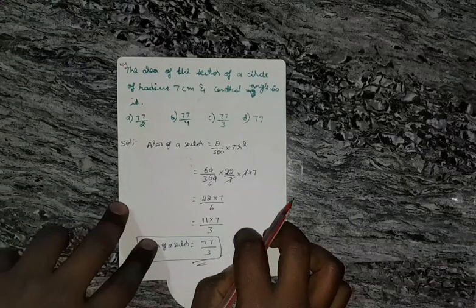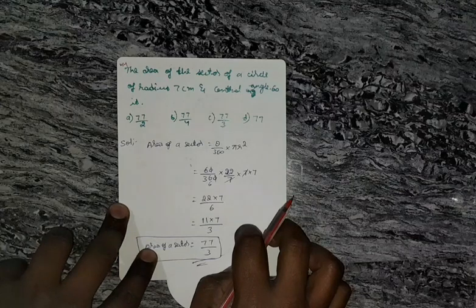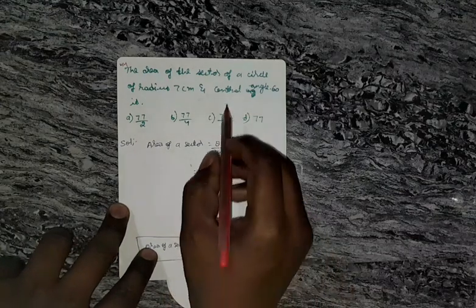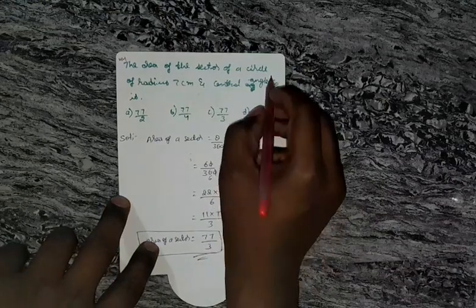Question number 44. The area of sector of a circle of radius 7 cm and central angle 60 degree.